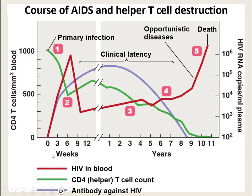As antibody count rises, the number of viruses in the body does decrease — it doesn't go away, but antibodies start to target them. Once those viruses start to decrease, the viral DNA is still integrated into our cells, but it kind of goes dormant for a very long time and you enter what's known as clinical latency — not weeks, but years.